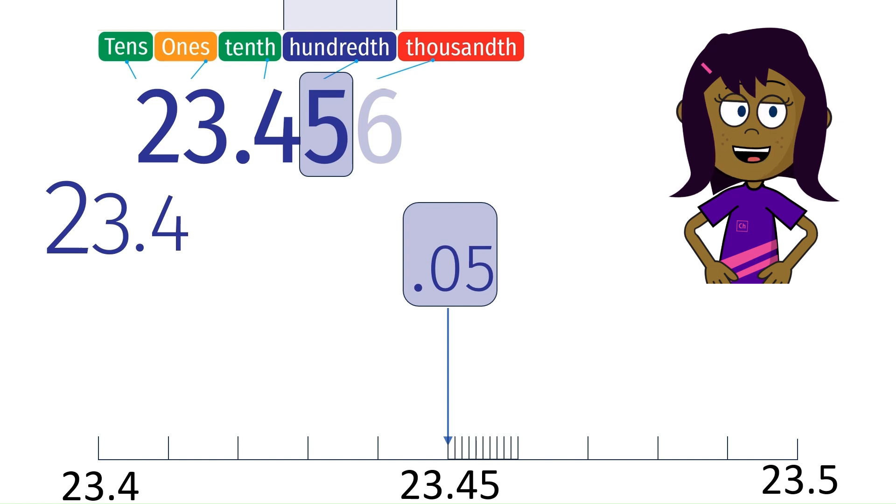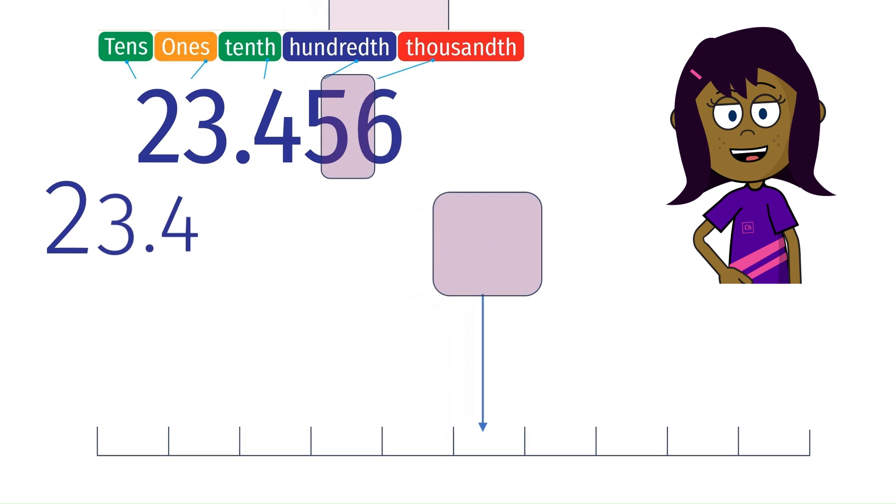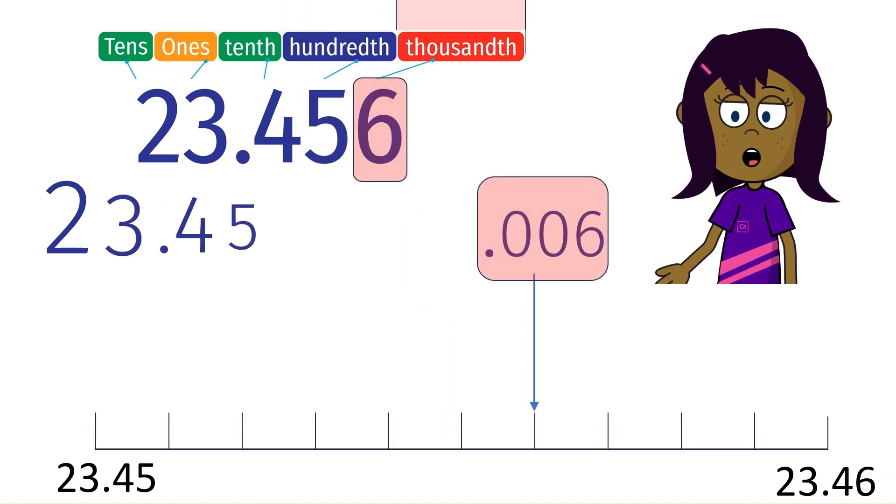Zooming in further to the thousandth place, we have six thousandths or 0.006. So we have location of 23.456.